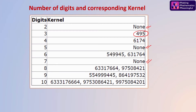For a three-digit number the kernel is 495. For a six-digit number there are two possibilities: the difference will end up with either 549945 or 631764. The same applies for eight digits — two different possibilities — for nine digits two different possibilities, and for a ten-digit number there are three possibilities.